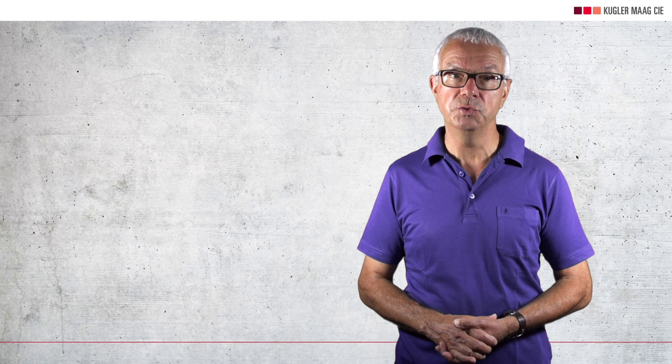At the beginning, item definition is about clearly defining and delimiting the subject of development. If a predecessor product exists, an impact analysis comes into play. Using a method that is specific to automotive, hazardous events are assessed and the necessary Automotive Safety Integrity Level, the ASIL, is determined — and this defines how development should be performed. A functional safety concept specifies on a vehicle level how safety goals should be achieved by getting systems to interact.